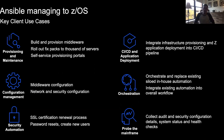Whether it's REXX, JCL, z/OSMF workflows, Zowe CLI scripts, or anything else you're using from an automation perspective today — all of those are really candidates for orchestration from an Ansible perspective. That's a nice space to look at for tying into wider automation strategies within your enterprise. Those three — security automation, provisioning and maintenance, and orchestration — are the top three I've been hearing from our customers in the last 18 months.